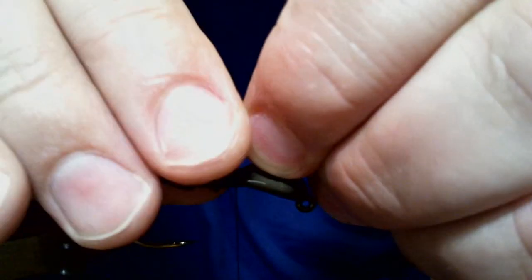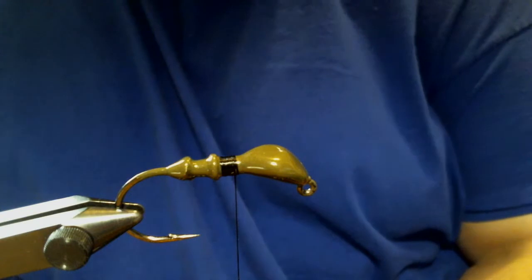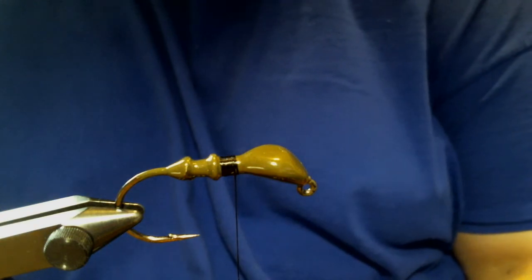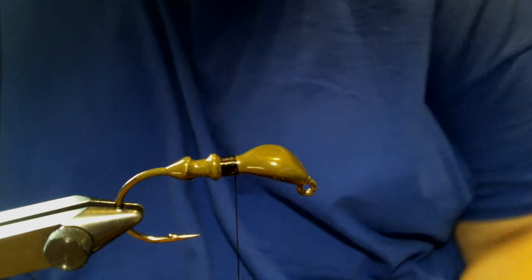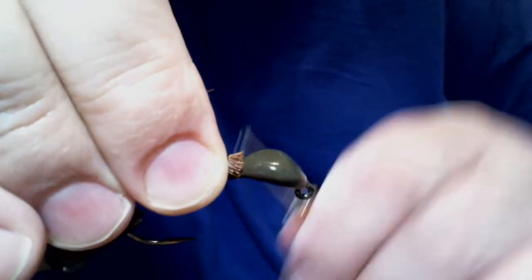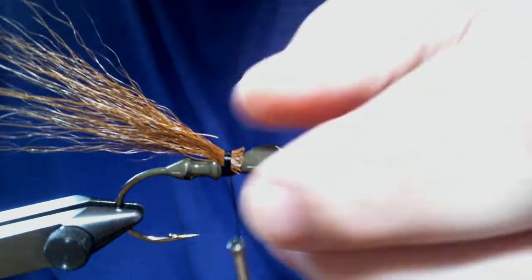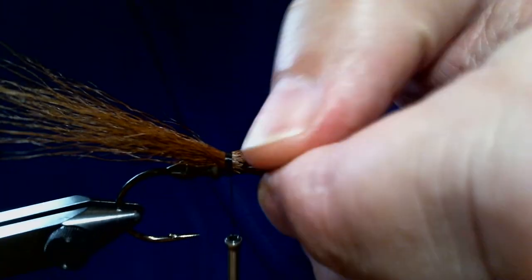This is going to flare out some, which is why I like this Arky jig for this. After I measure it where I want it, I'm going to trim the bucktail, some of the short pieces out. Make a couple wraps just to hold it in place. You'll see a couple short ones there falling out.